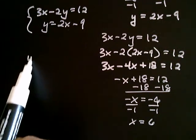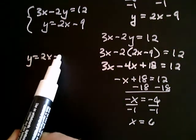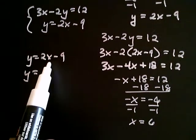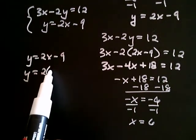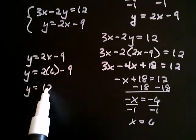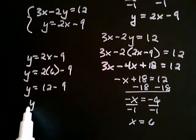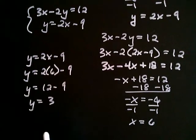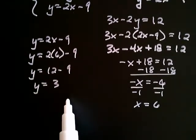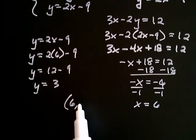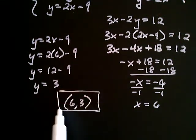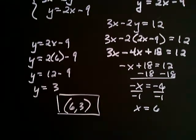Remember, this is only half the solution. I go back and use y equals 2x minus 9. Substituting x equals 6: y equals 2 times 6 minus 9 — that's 12 minus 9 — so y equals 3. My solution is the ordered pair (6, 3). That's where these two lines cross, and that's how I solved my system of linear equations.